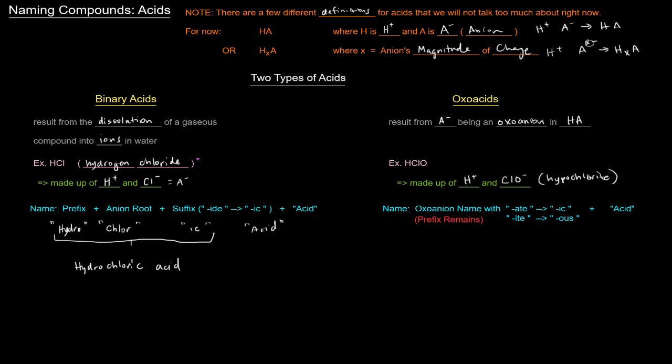So in this case, the oxoanion name is hypochlorite. But we're going to change the ite into ous. So it's going to be hypochlorous acid at the end. And that's it. So that is HClO.